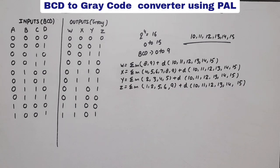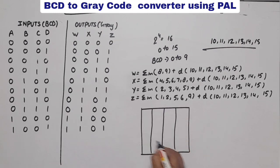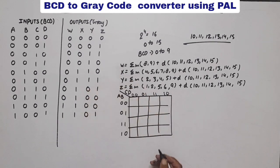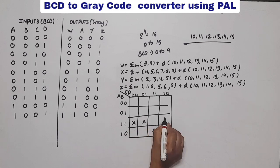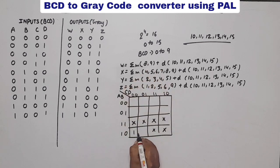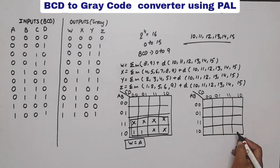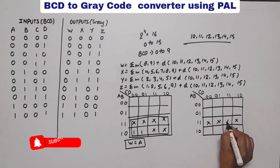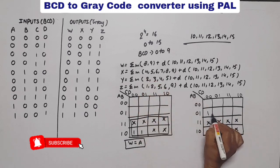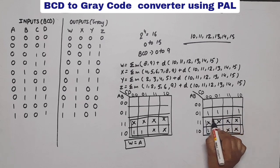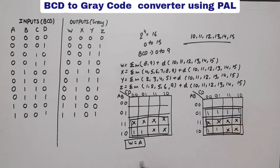We need 4 K-maps because we need 4 equations. First K-map is for W. We first put the don't cares at positions 10, 11, 12, 13, 14, 15. Now minterms are 8 and 9. The combination forms a complete octet, and from this octet W equals A — the common variable is A.